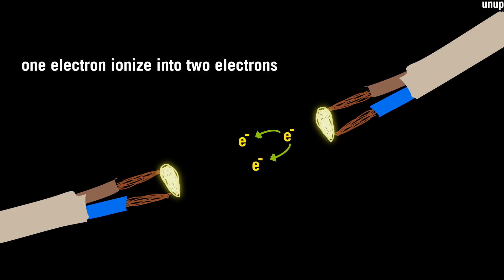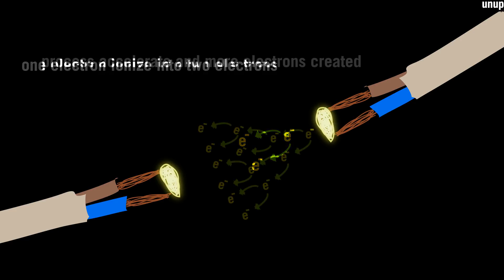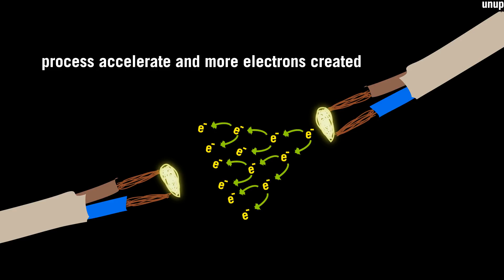One is the original electron and the other is an electron from the ion. This process starts to accelerate and more electrons are created. This outburst of electrons is what we call an electric spark.